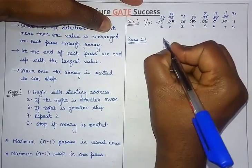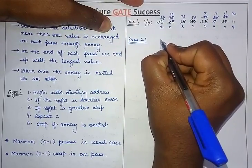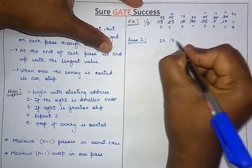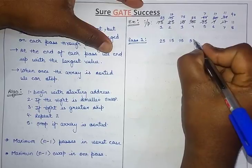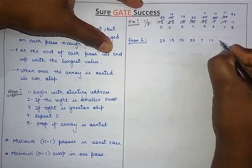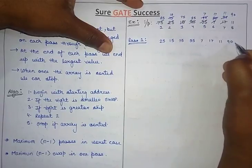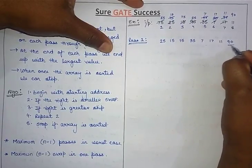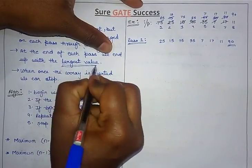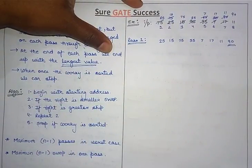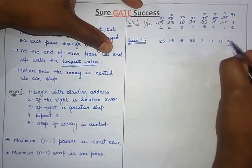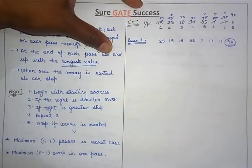Now write down the resultant array after one pass: 25, 15, 75, 35, 7, 17, 11, and 90. You can see it ends up with the largest value. As I told you, at the end of each pass it will end up with the largest value. So 90 is now at its correct position.